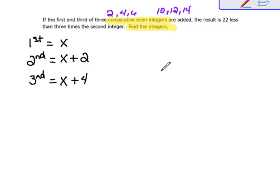Now we're ready to write our equation. It says if the first, so here's the first one, and the third, so our third one is x plus four, are added. So if we were to add these things together, the result is, or equals,